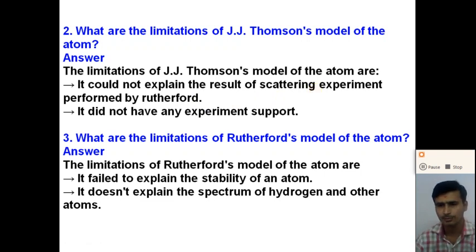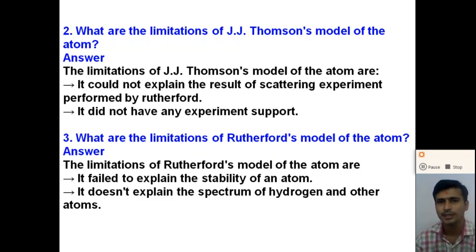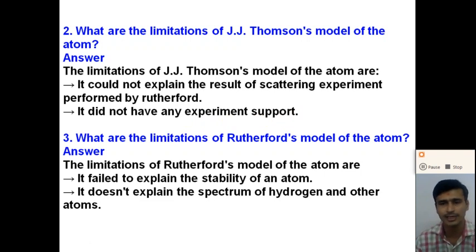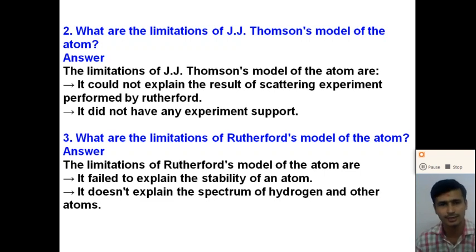According to J.J. Thomson's model, the positive charge is continuously distributed over a sphere. Because of this, the model cannot explain the scattering of alpha particles from the gold foil. It did not have any experimental support. Therefore, the J.J. Thomson model of an atom failed to explain the different scattering of alpha particles.